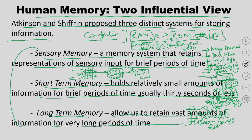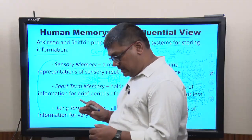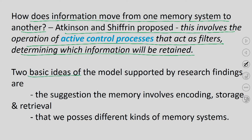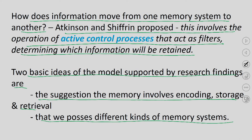If you want more details about the Atkinson-Shiffrin model, there is a parallel course this semester on cognitive psychology where memory is explained in detail. Since this is an introductory course, we are just touching base. Information moves from one memory system to another in the Atkinson-Shiffrin model through active control processes that act as filters determining which information will be retained. The model is supported by research findings suggesting that memory involves encoding, storage, and retrieval, and that we process different kinds of memory systems.